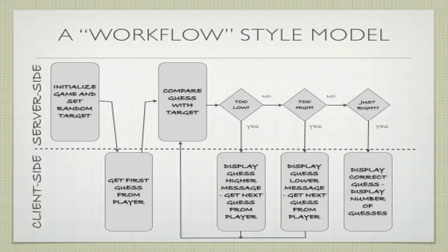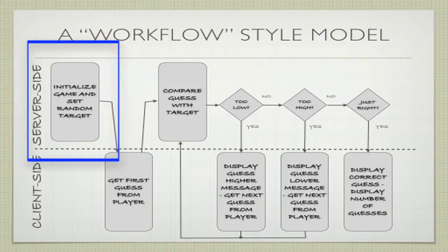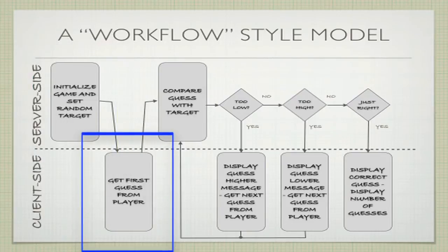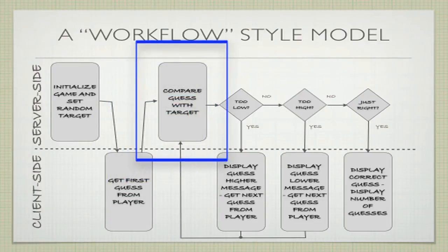Once again, we see our workflow style model where the initialize the game happens on the server side where we set the random target and initialize other values. On the client side, the client will see a form where they can enter their first guess. Once the guess is entered and the button is clicked, a request is sent back to the server where it will compare the guess. Based on the comparison, it will need to make one of three decisions.